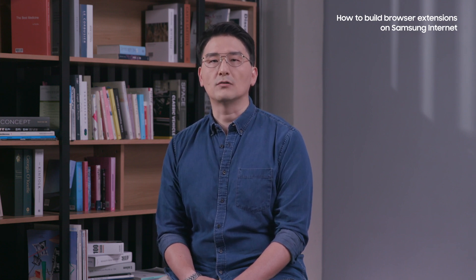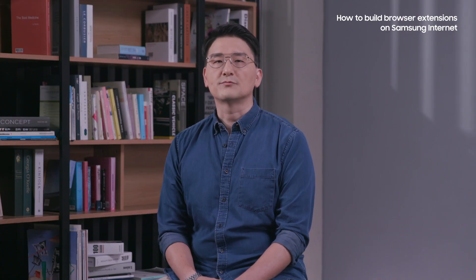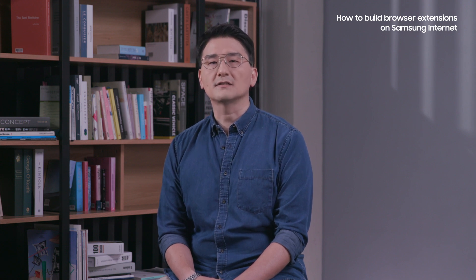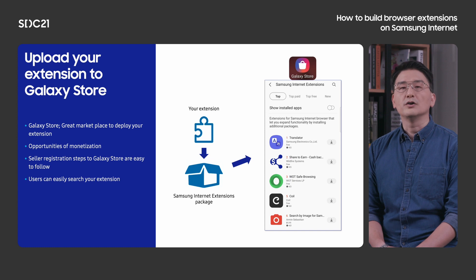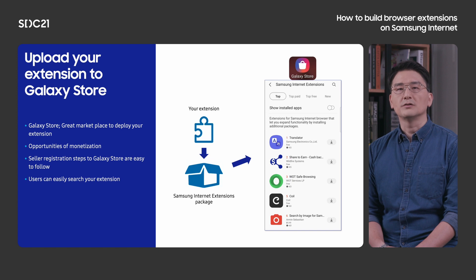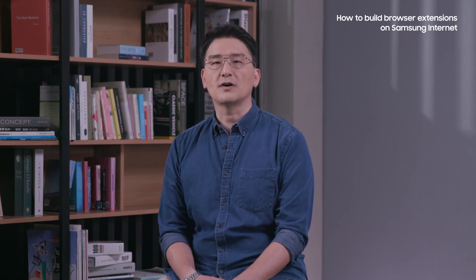The Galaxy Store is a great marketplace to deploy your extensions and grow your business. Registration to the Galaxy Store as a seller is necessary, but registration is quite easy and detailed guidance can be found in the Galaxy Store Seller Portal. Once you create an account and have registered yourself as a seller, you can upload your extension packages to the Galaxy Store. After confirmation, your extension will be available for download. Samsung Internet users can then browse or search for your extensions for installation, and the installation process is very similar to other Android app stores.